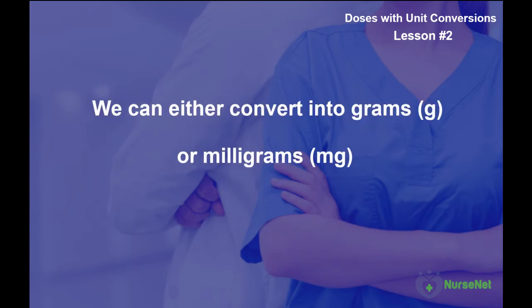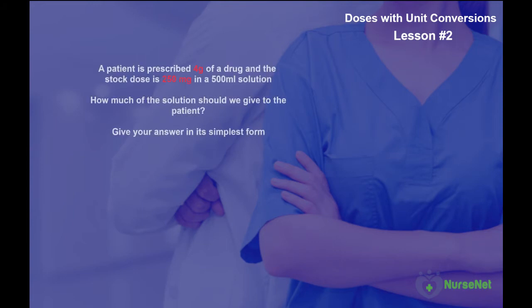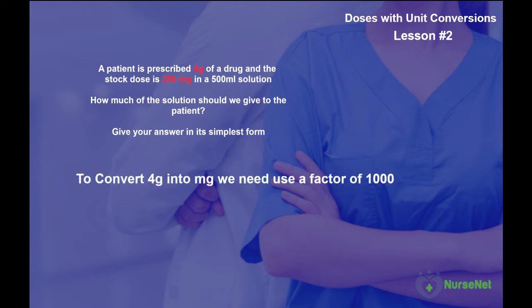We can either convert everything into milligrams or we could convert everything into grams. Let's convert into milligrams, thinking back to the converting metrics lesson within the foundation of maths element of this course. We know that to convert four grams into milligrams we need to use the scale factor of 1,000, so we multiply four by 1,000 to convert into 4,000 milligrams.